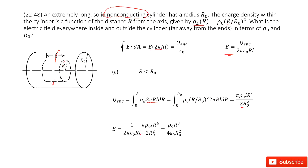Now we input the enclosed charge into the equation. We can see that pi and pi cancel, l and l cancel, and r terms simplify — the r cancels with one power from the denominator — so we get the final answer for r less than r0.